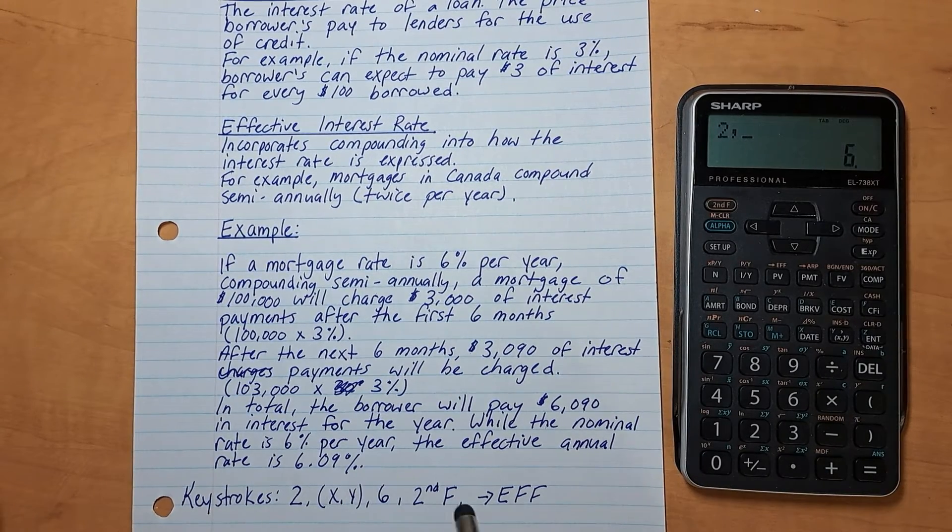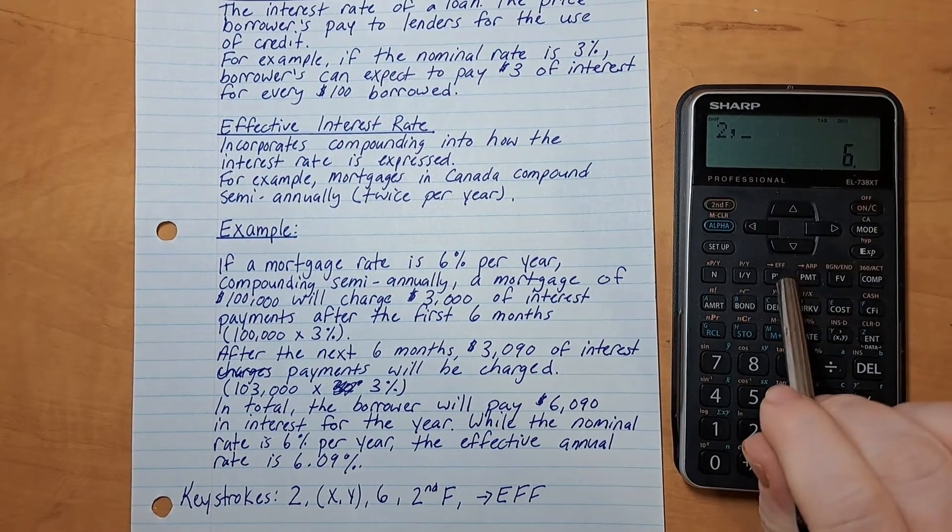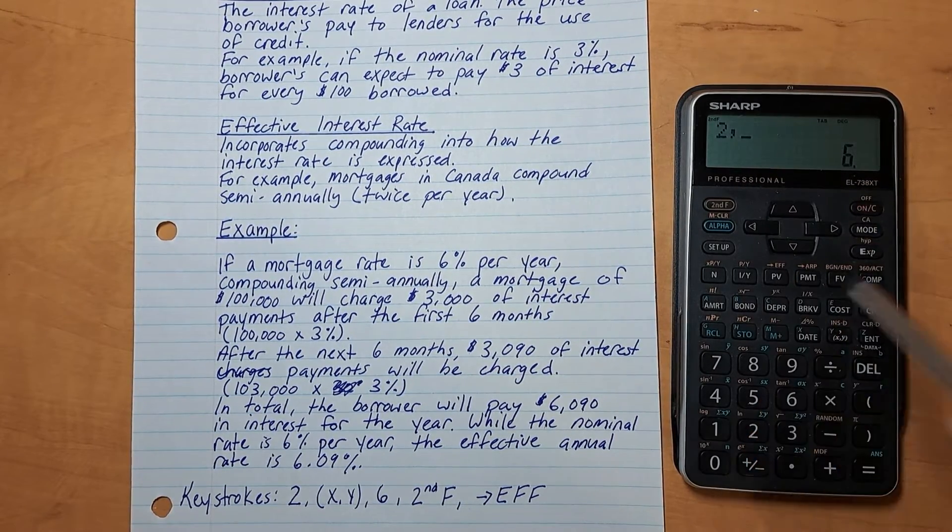Then to calculate the effective annual rate, you hit second function and this EFF, which is the PV button as well. And it is 6.09%.